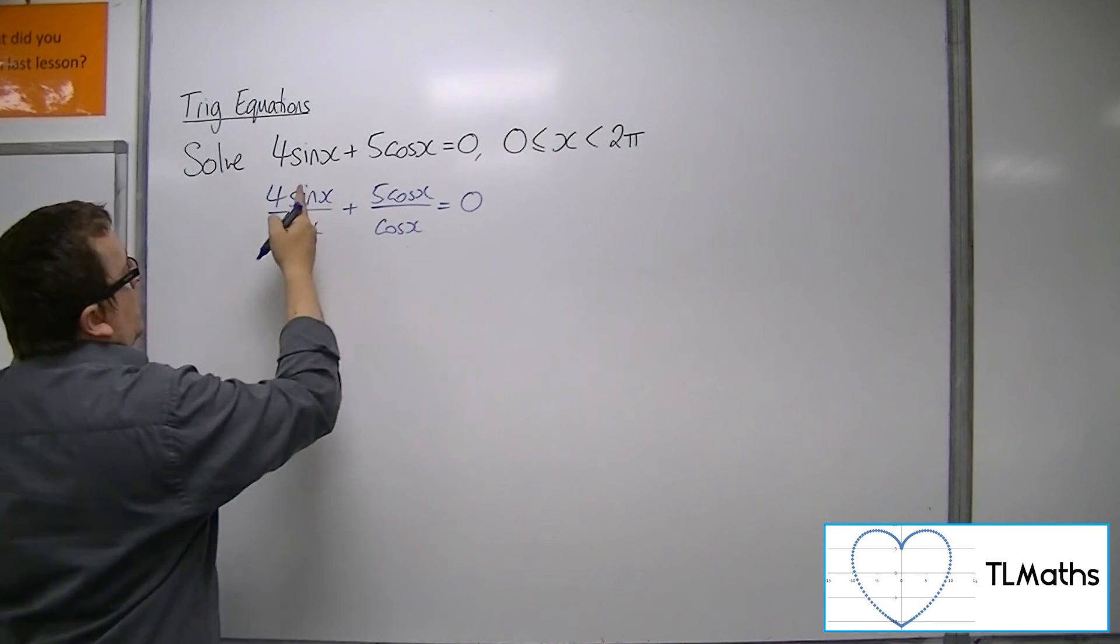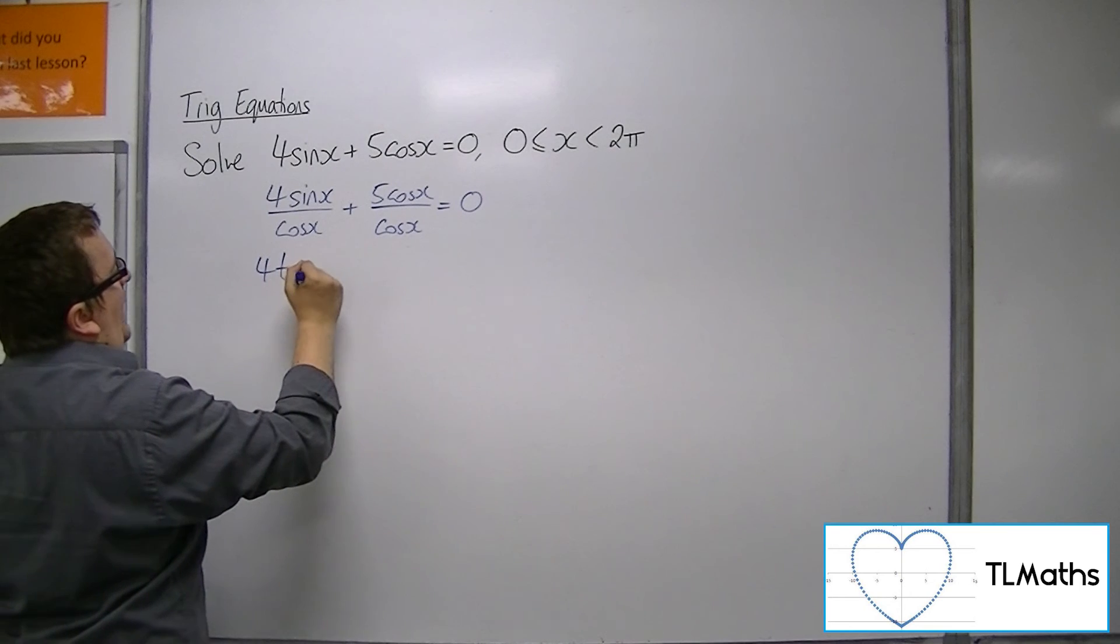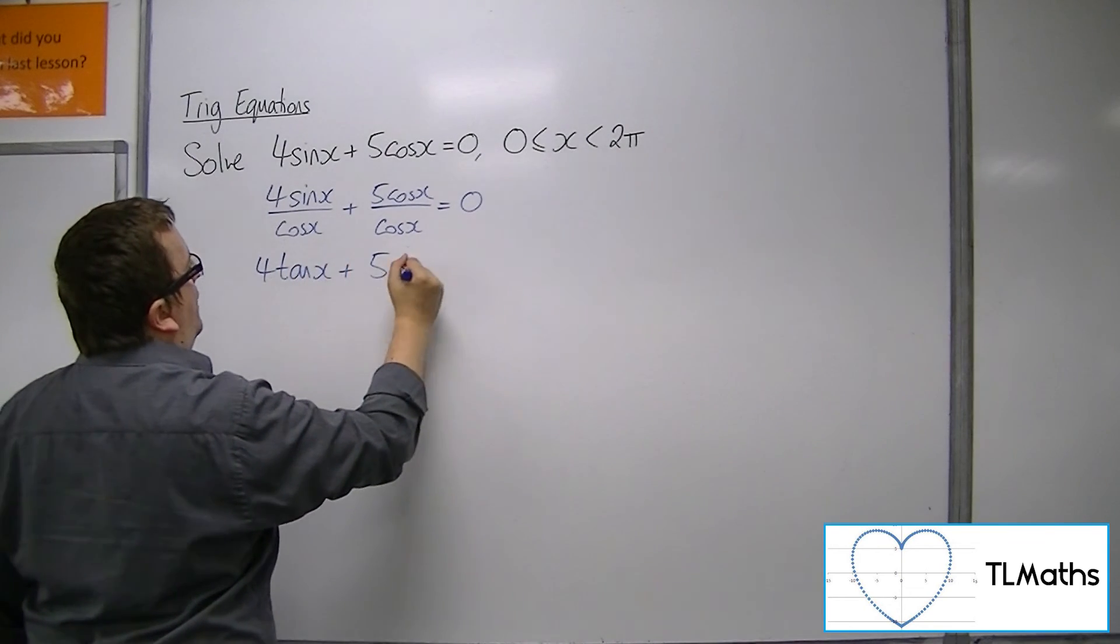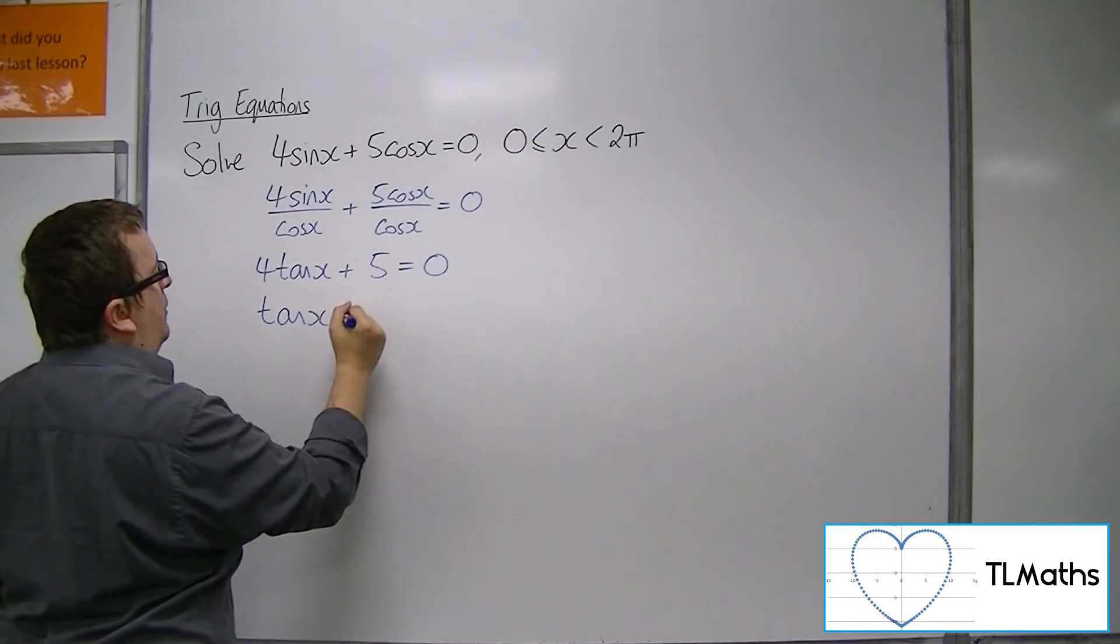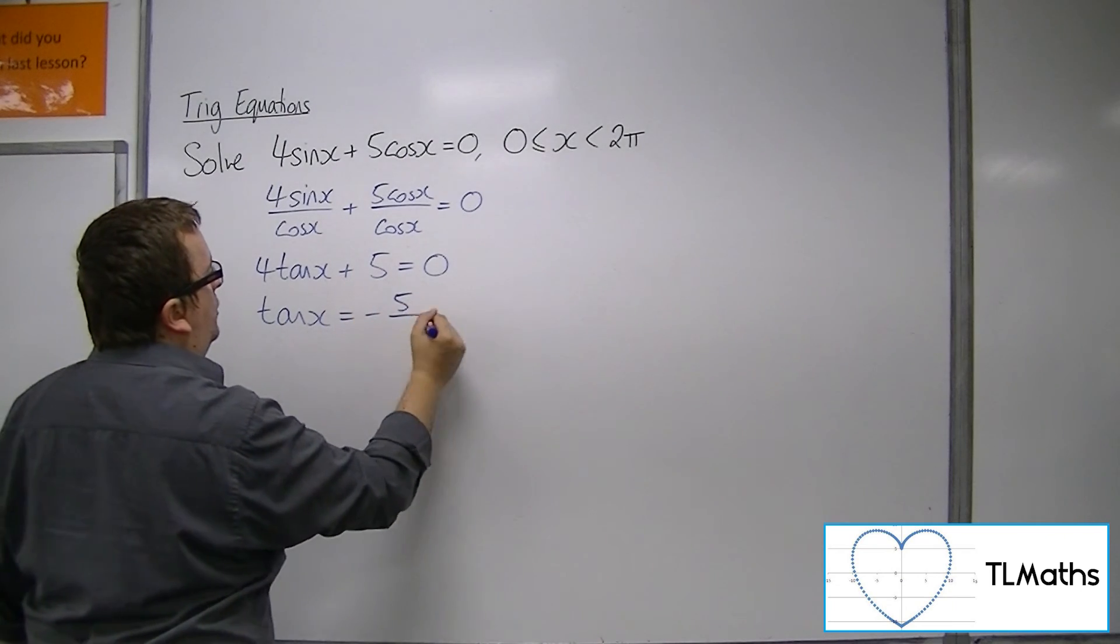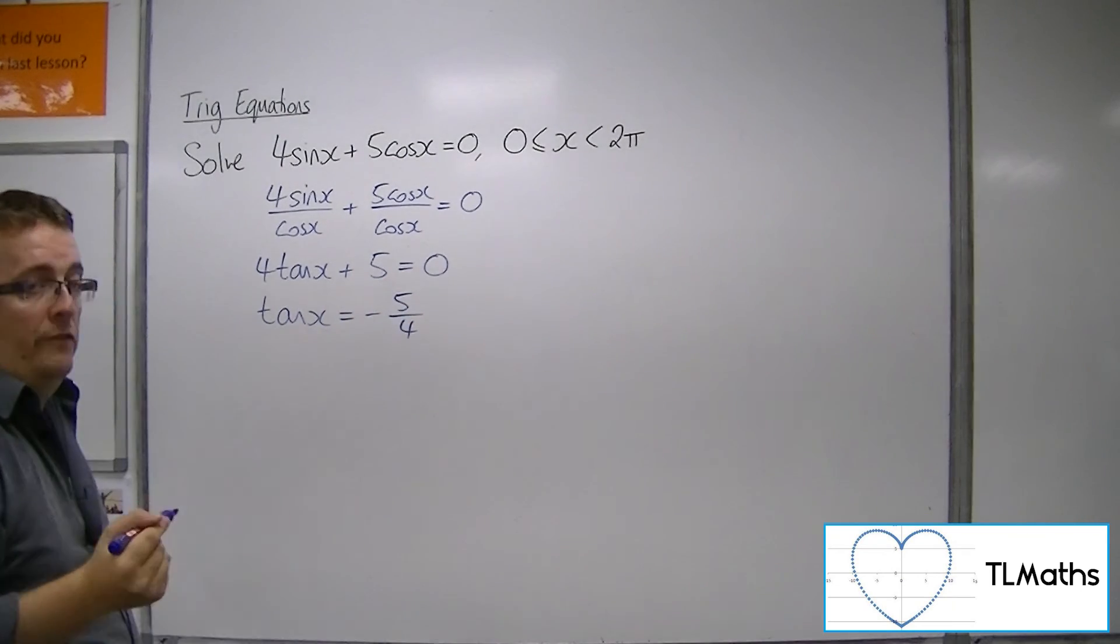And so we get 4tan(x) + 5 = 0. Then subtract 5 from both sides, divide both sides by 4, and we get tan(x) = -5/4.